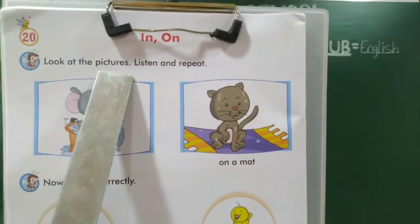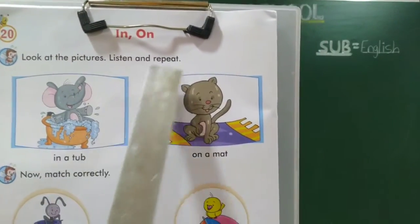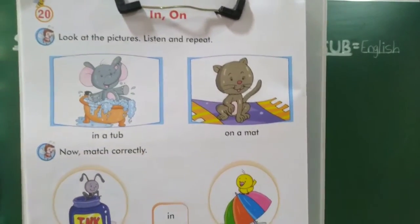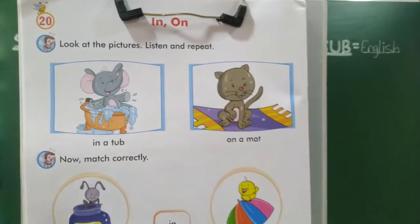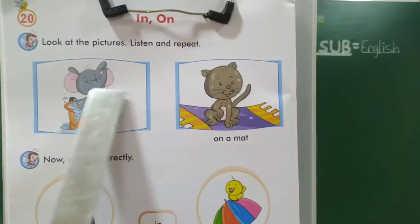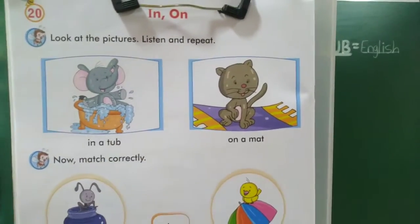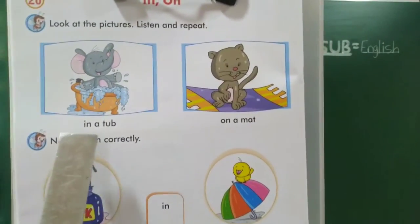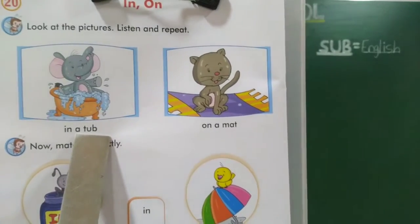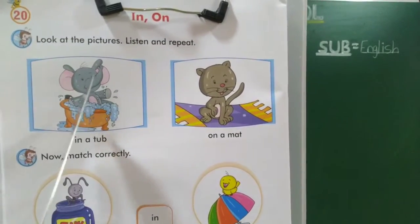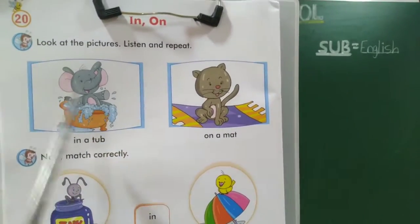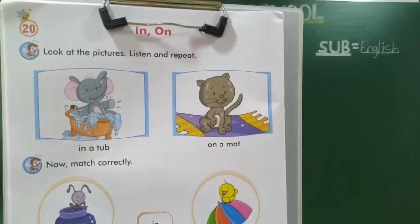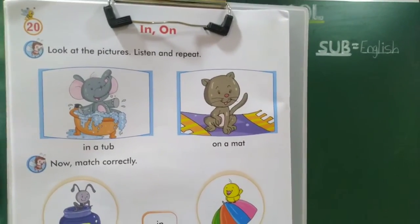Look at the pictures. Listen and repeat. Ata aethi baga two pictures dilele aahe na? Elephant kaay aahe — paana chaat tub madhe aat basla aahe na? Ho na? In a tub. Manje? Paana chaat tub madhe tu basla aahe. Kashaakosla aahe? Tub madhe, tub chaat madhe.